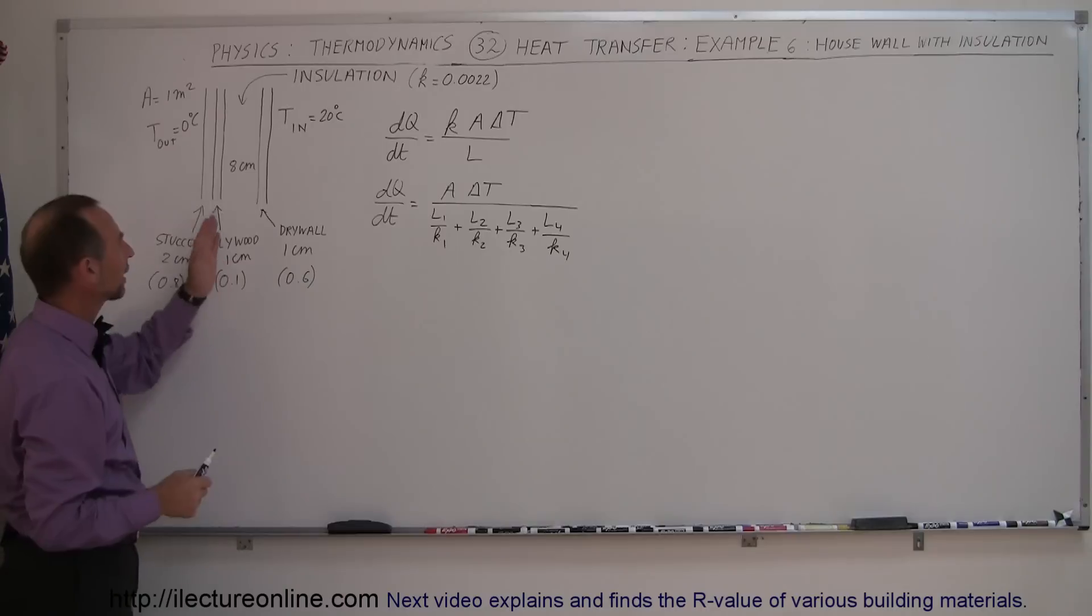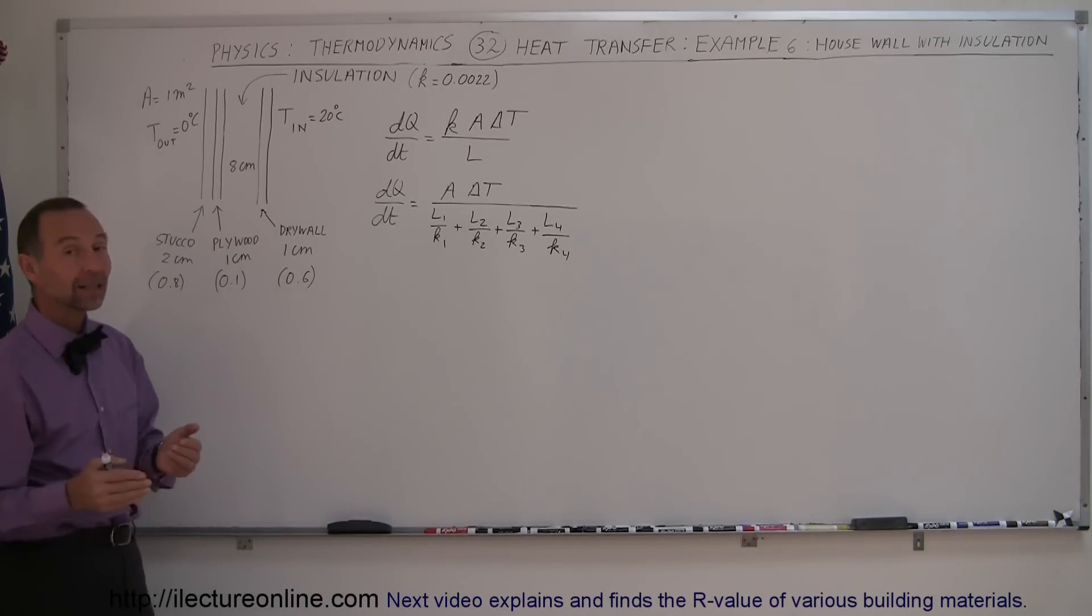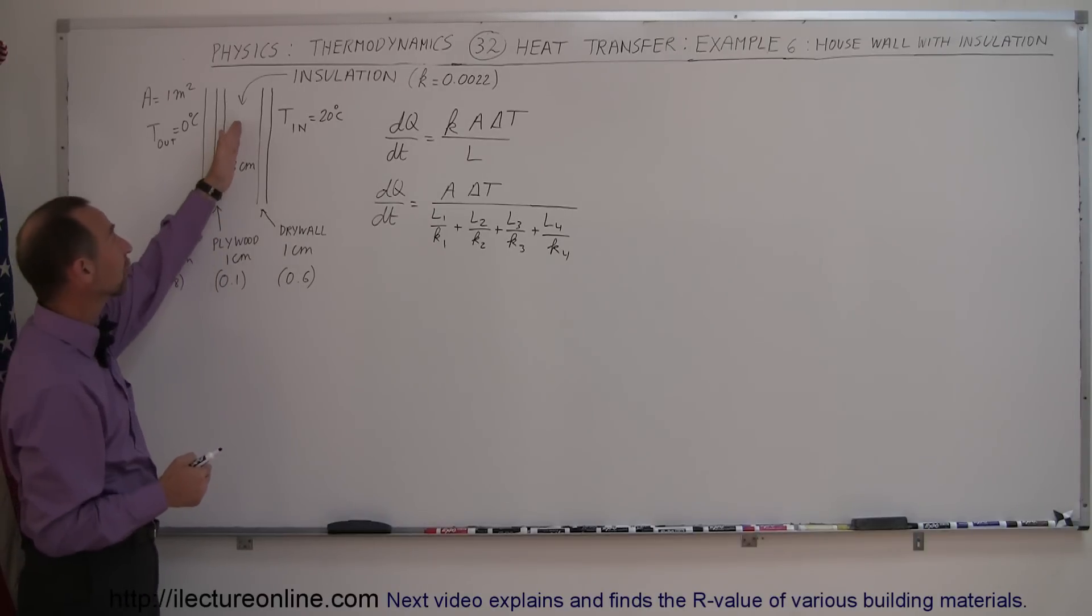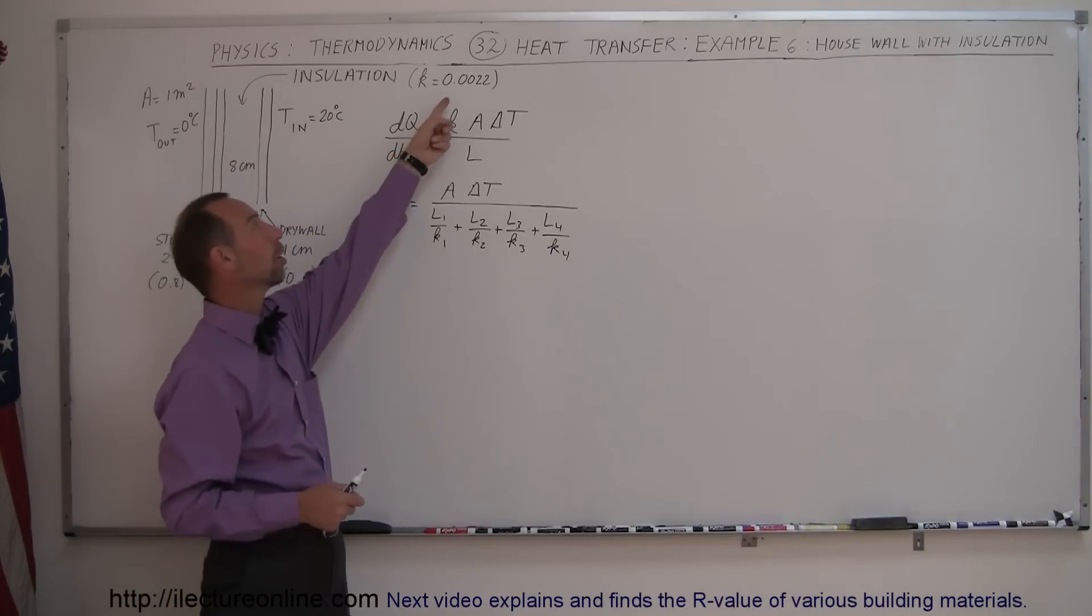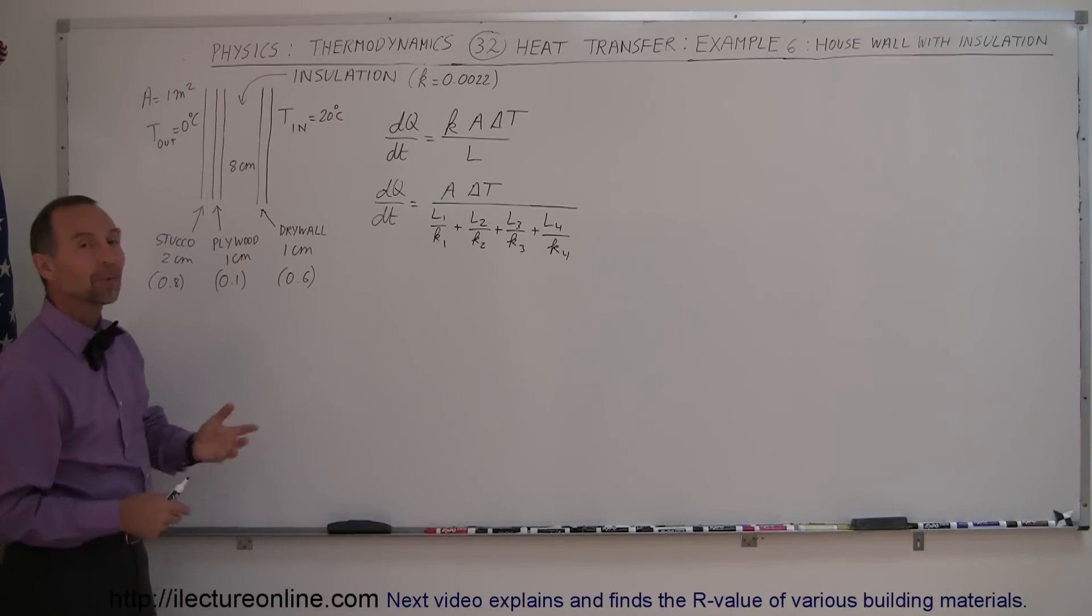And if you remember right, when we had an airspace, the DQDT, the amount of heat transfer to the wall per unit time per second, was 5.8 watts, 5.8 joules per second. Let's see how much changes when we put insulation material, which has a much smaller heat connectivity value than air. Let's see how much of a difference that makes for our DQDT.